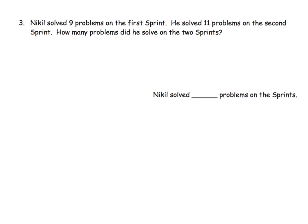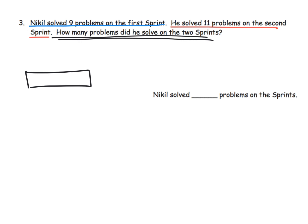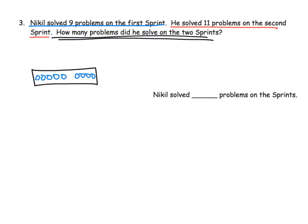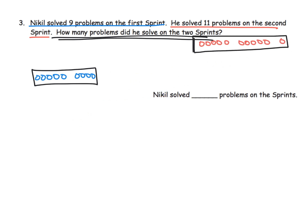Nikil solved nine problems on the first sprint and 11 problems on the second sprint. How many problems did he solve on the two sprints? So we can model the first sprint — nine problems — and draw in dots to represent that. There are my nine. Then for the second sprint, 11 problems, I'll draw a slightly larger tape and count out 11 dots.